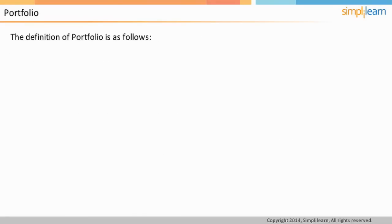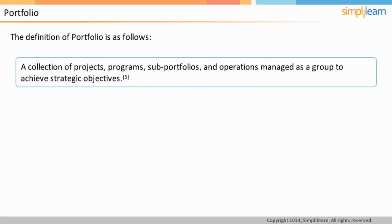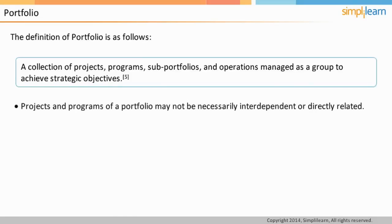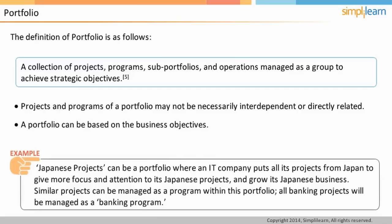Portfolio is yet another term used along with project and program. A portfolio may have multiple projects and programs that are managed as a group to achieve strategic objectives. Note that all projects and programs in a portfolio may not be necessarily interdependent or directly related. A portfolio can be created based on business objectives. For example, an IT service company can have a portfolio named Japanese Projects, which is formed with an aim to take over the Japanese market. Within this portfolio, similar projects can be managed as a program and all banking projects from Japan can be managed as a banking program.